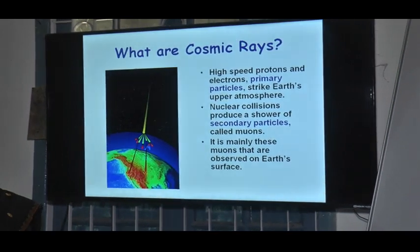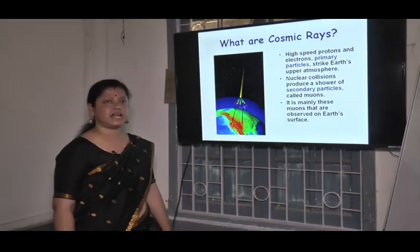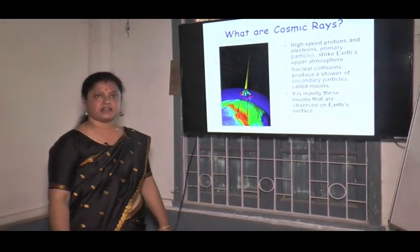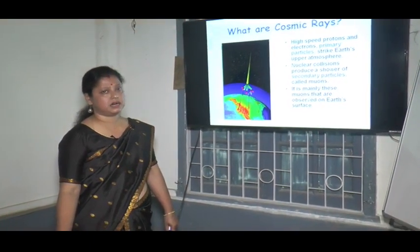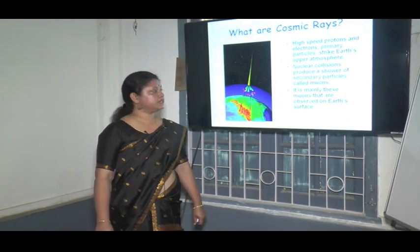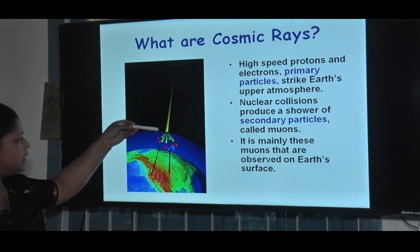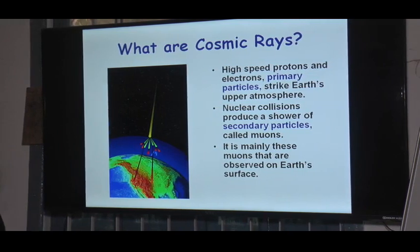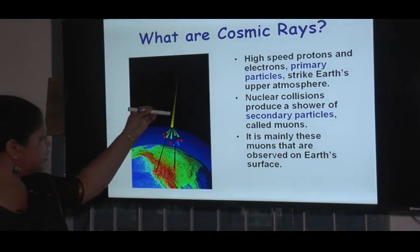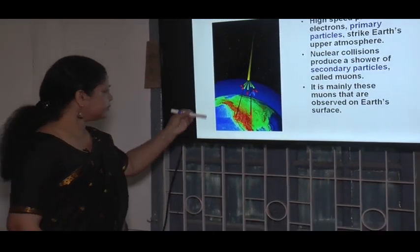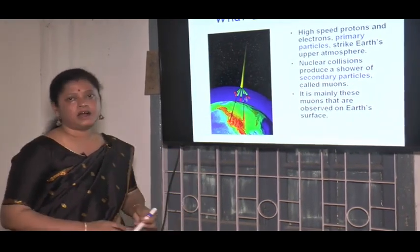Cosmic rays are coming from outer space. Cosmic rays are high-speed protons and electrons — primary particles — which strike Earth's atmosphere. After that, nuclear collisions produce a shower of secondary particles called muons. It is mainly these muons that are observed on Earth's surface. These cosmic ray particles enter Earth's atmosphere, shown here in blue, and when they enter, collisions take place with the gas molecules present in our atmosphere, producing secondary particles.